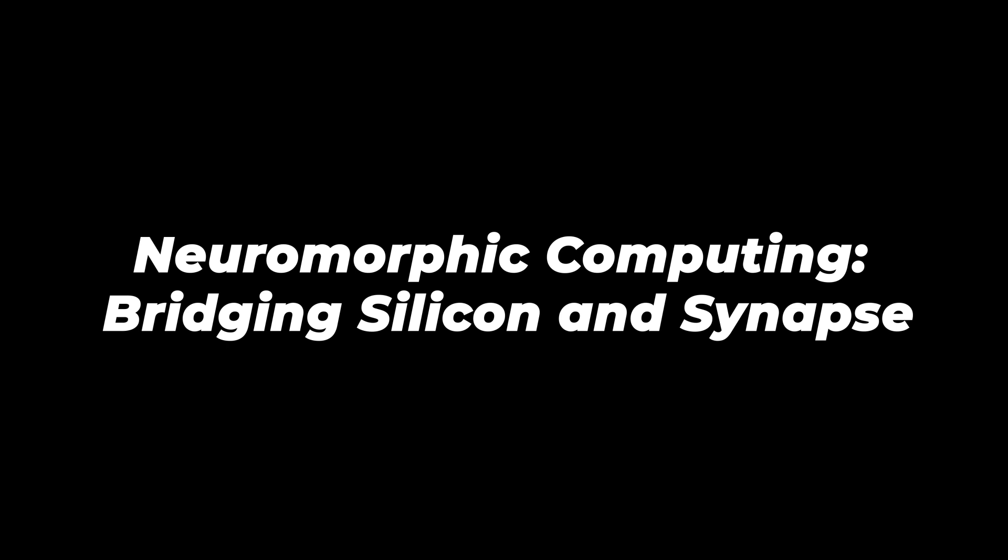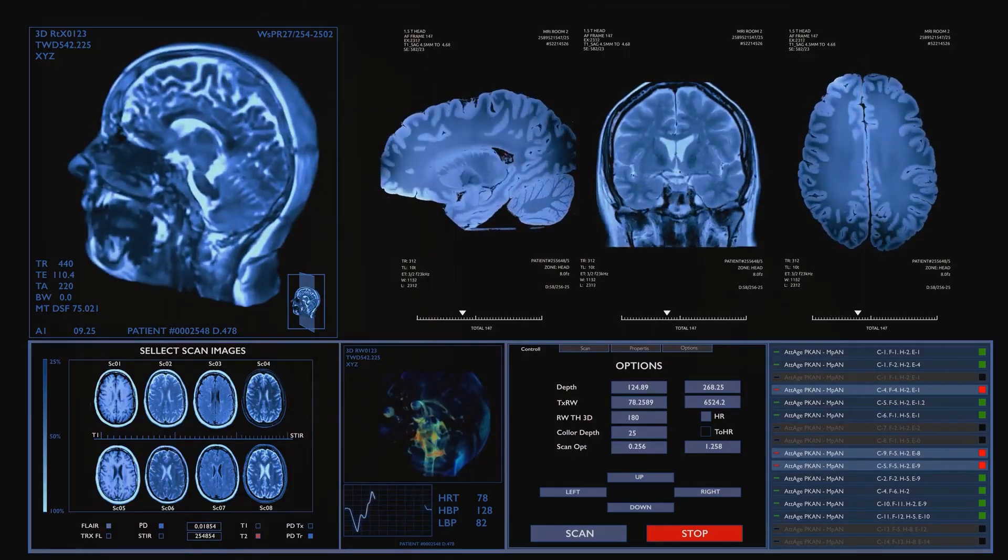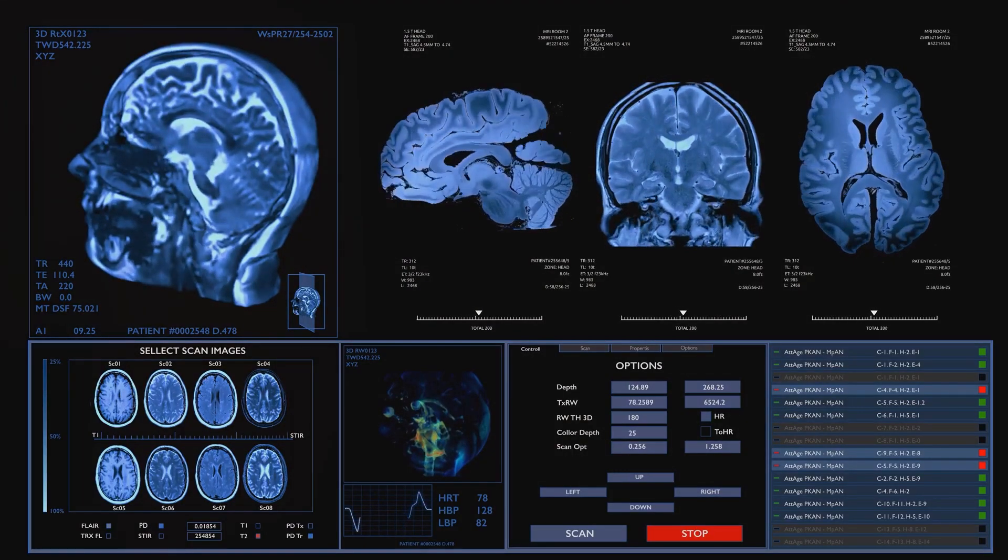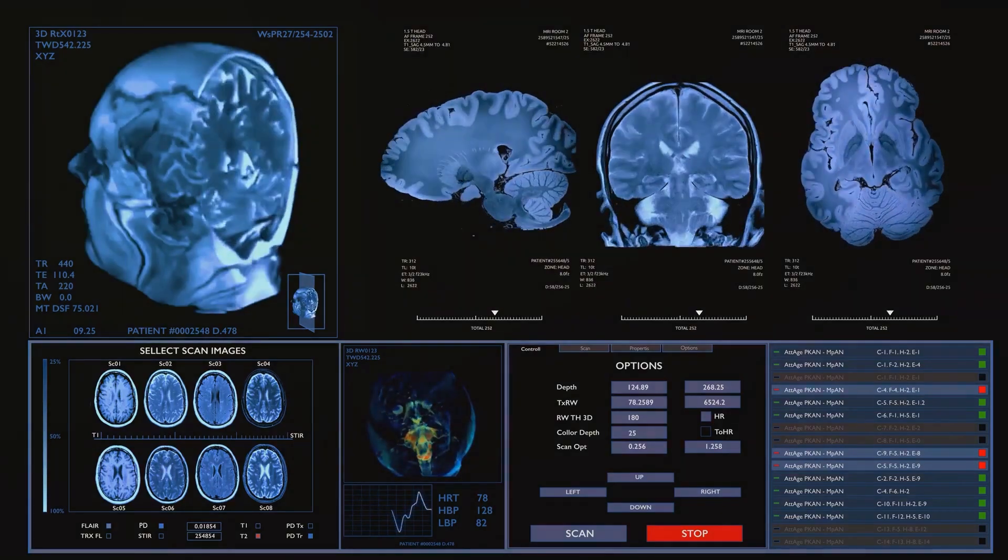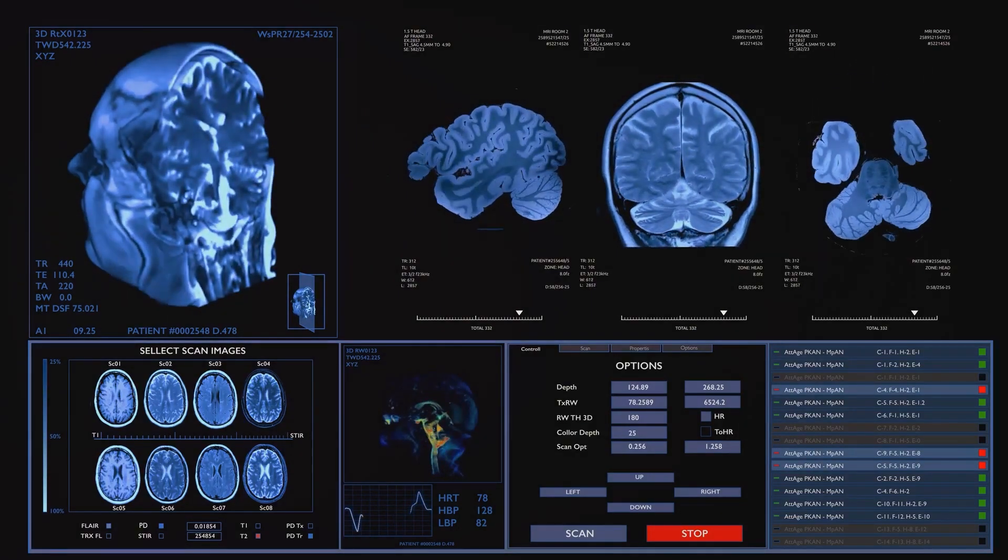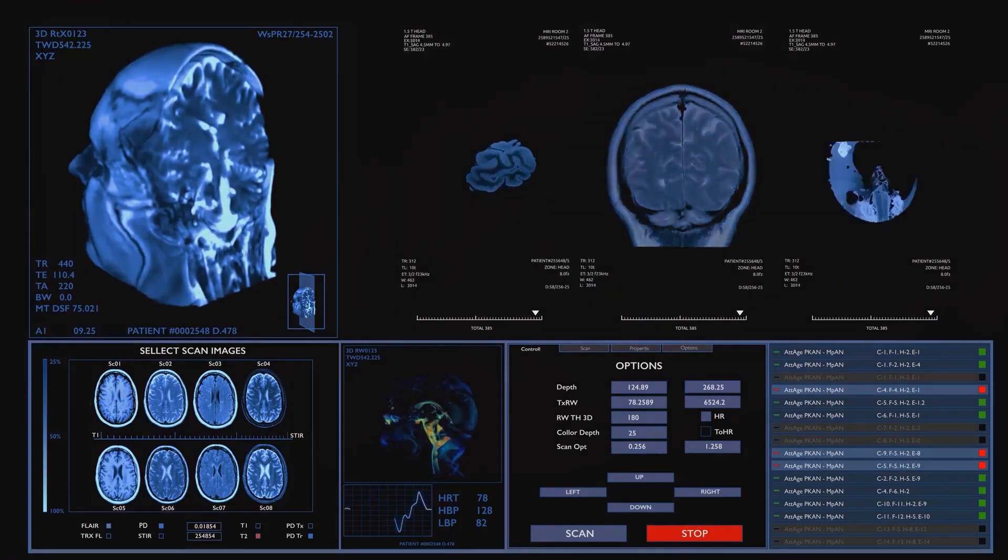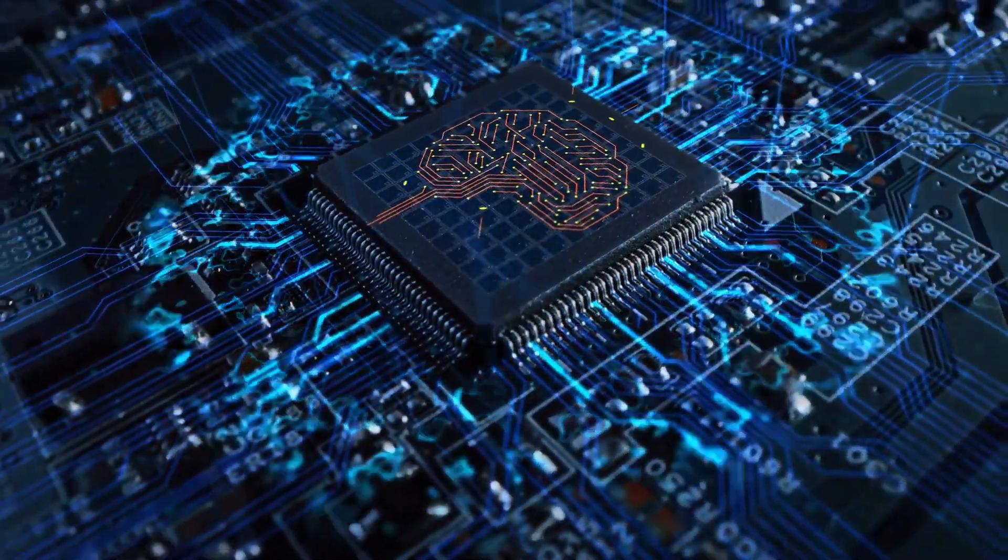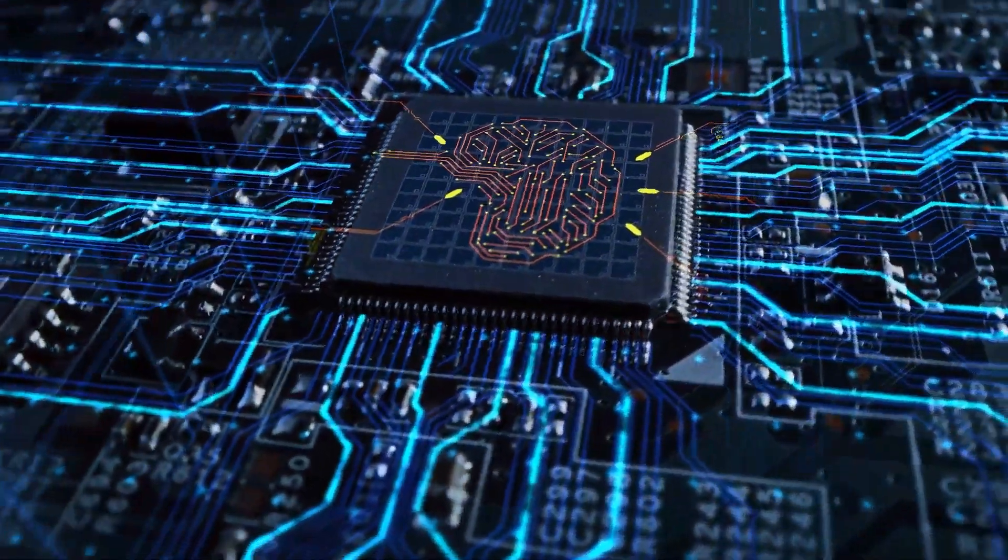Neuromorphic computing, bridging silicon and synapse. The brain-on-a-chip technology represents a convergence of neuroscience and computer science, giving rise to neuromorphic engineering. This field aims to create computer architectures that mimic the structure and function of biological neural networks.